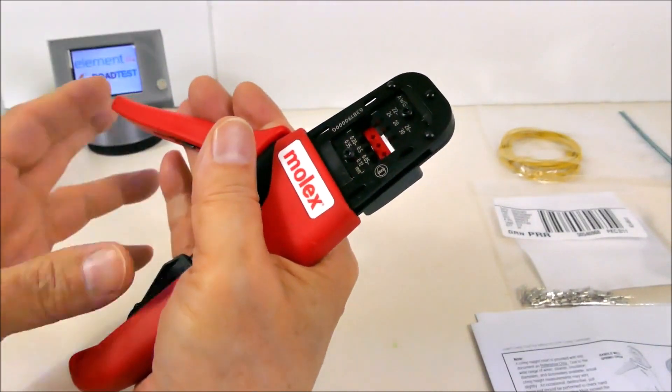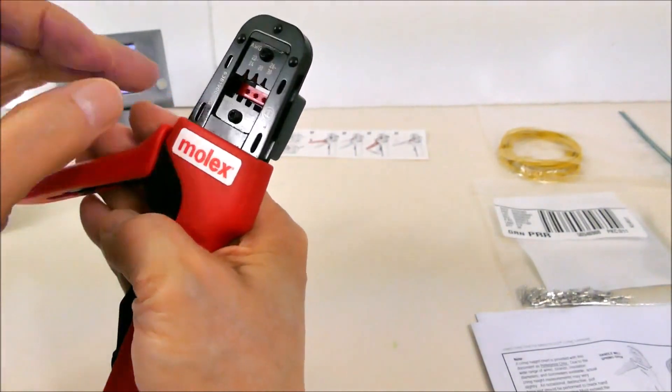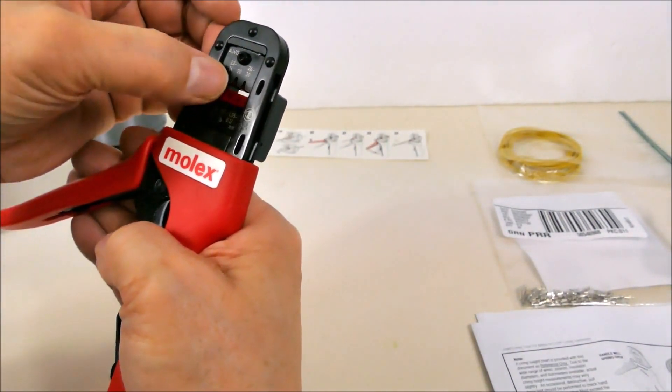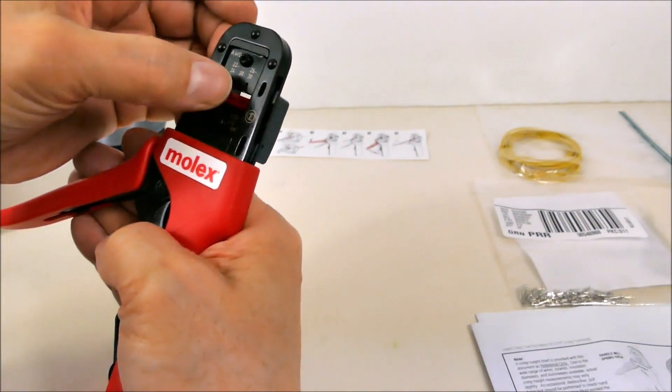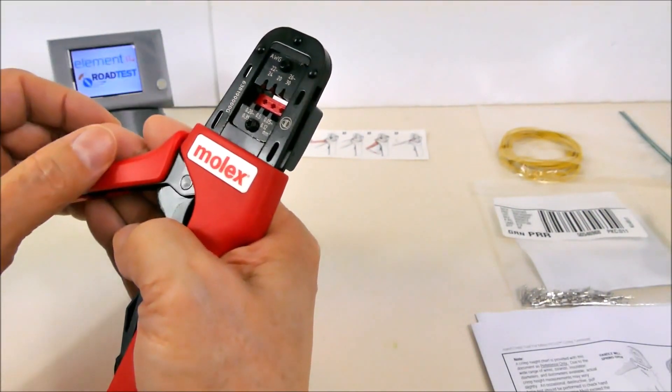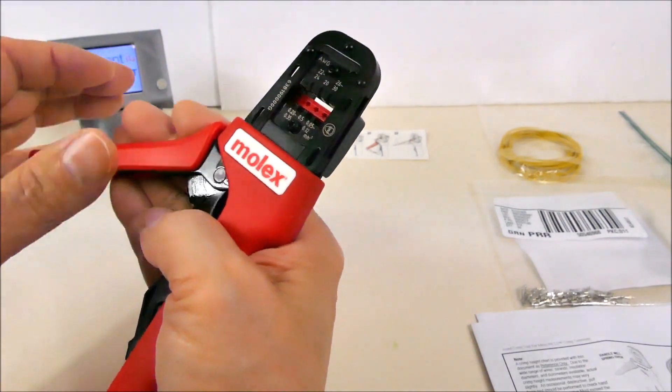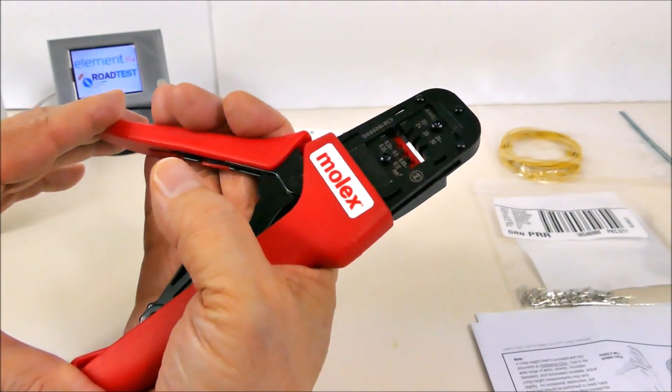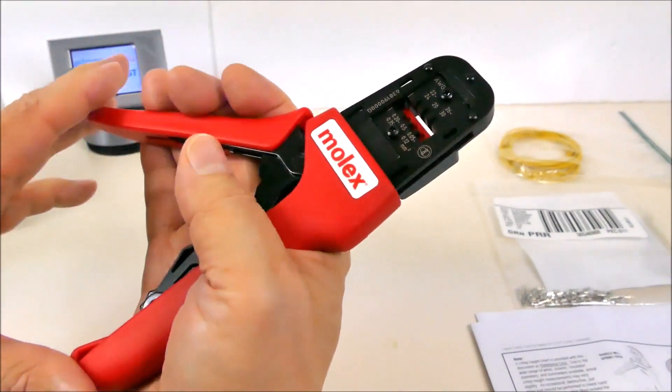It has three positions for crimping: one for 22 to 24 gauge wire, one for 20 gauge wire, and one for 26 to 30 gauge wire. This crimper handles Molex's Micro-Fit line of connectors, which is a useful addition to my toolbox.